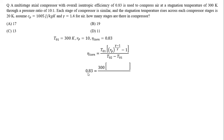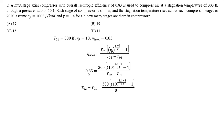After substituting, the temperature rise across the compressor T02 − T01 = 300 × (10^((1.4−1)/1.4) − 1) / 0.83. Solving this gives T02 − T01 = 336.39 Kelvin.